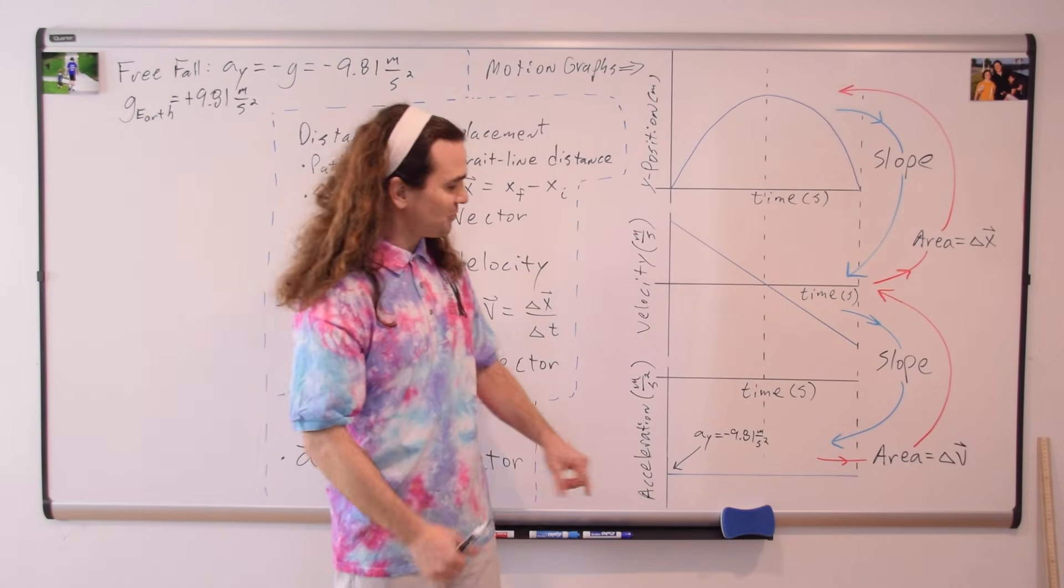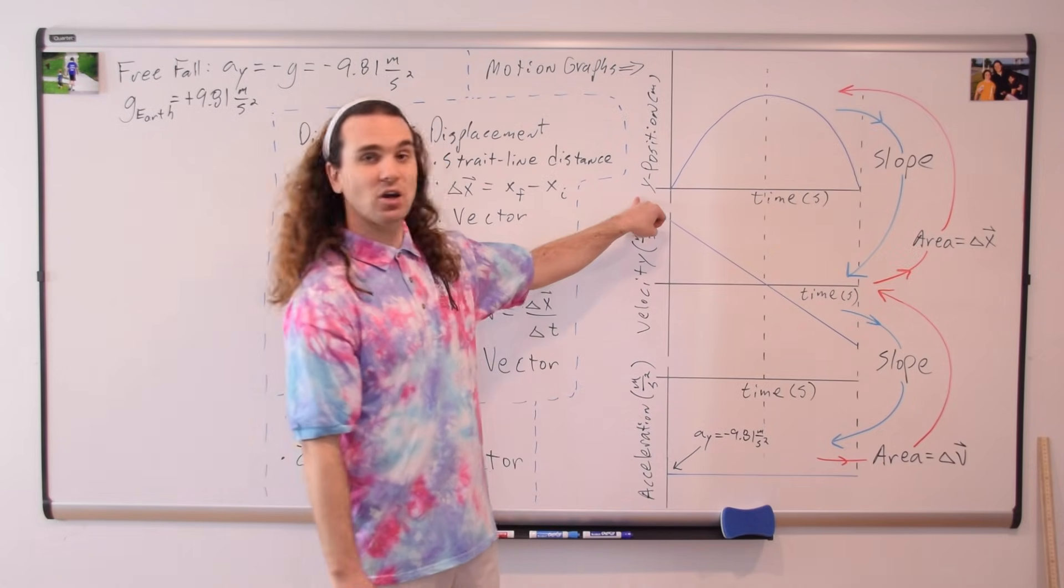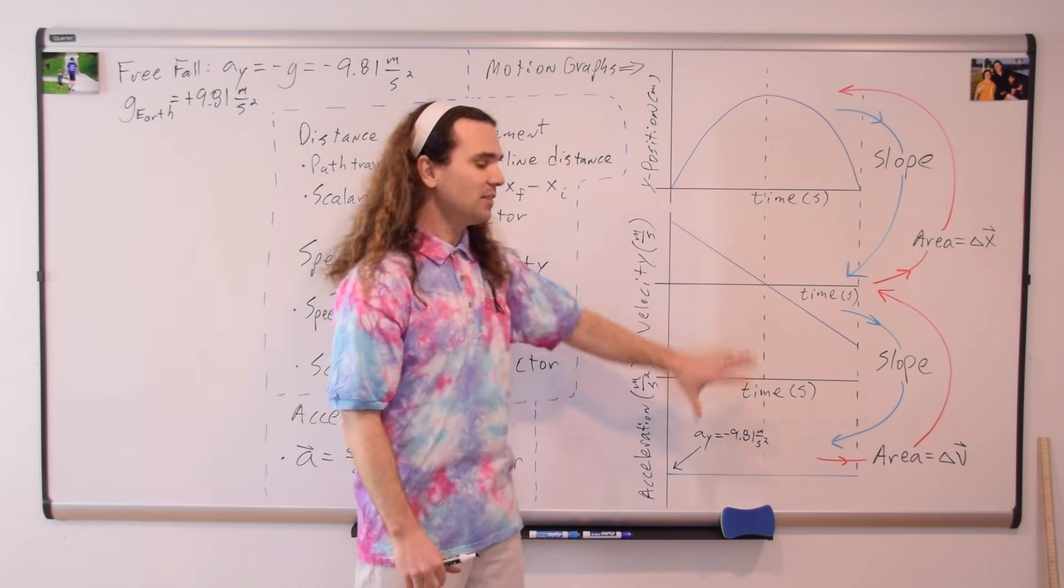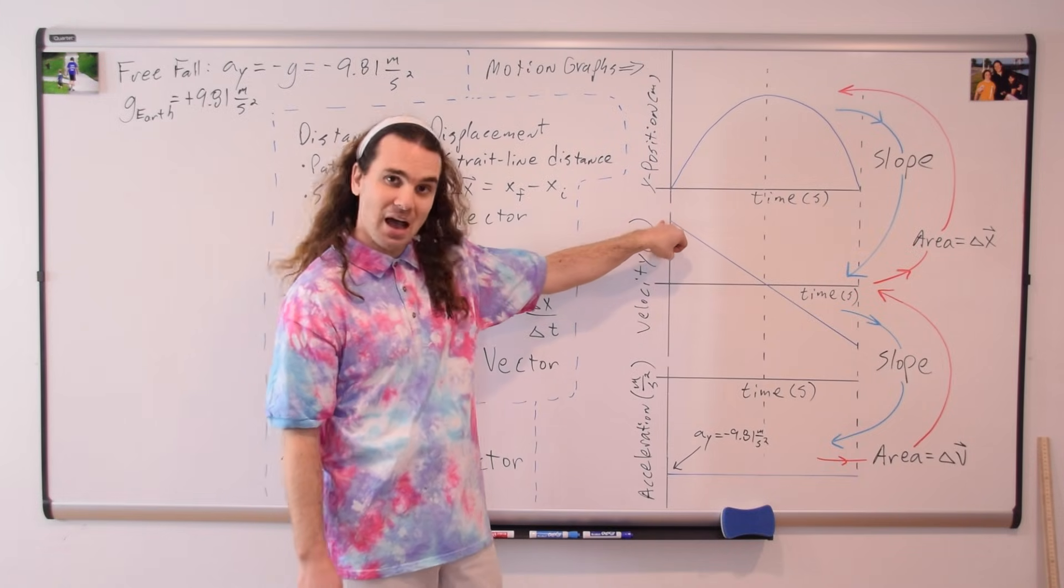Very nice. Let's assume the acceleration in the y direction equals negative 9.81 meters per second squared, and we're talking about the y position. So yes, this describes an object in free fall. More specifically, it has a positive initial velocity, it's thrown upward and it comes back down.